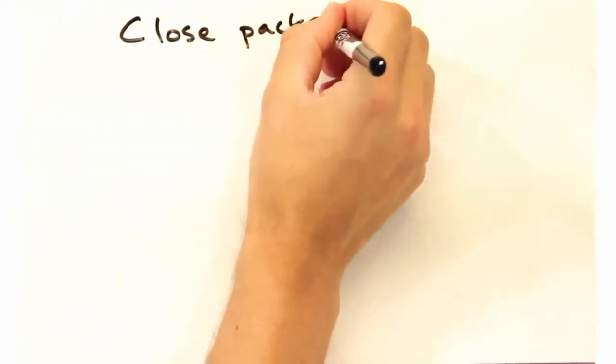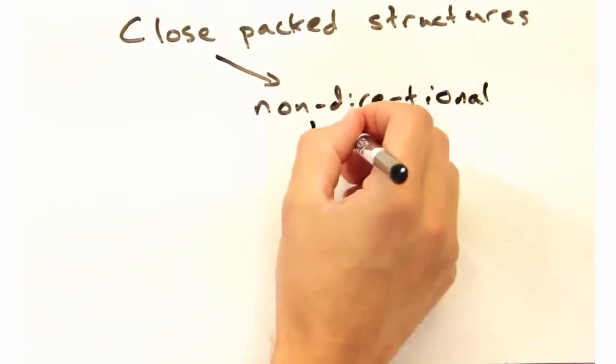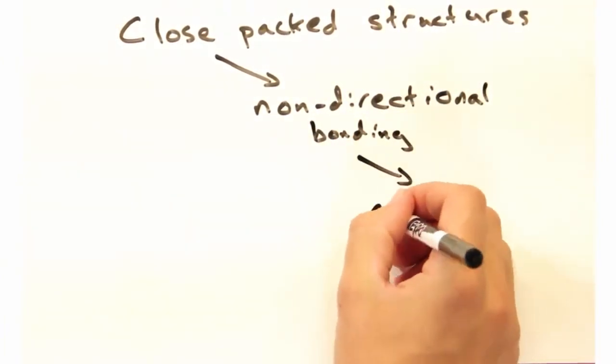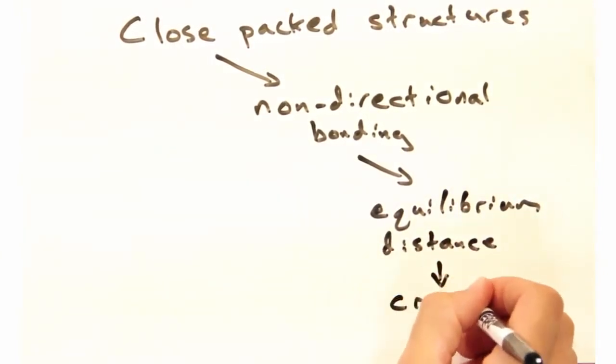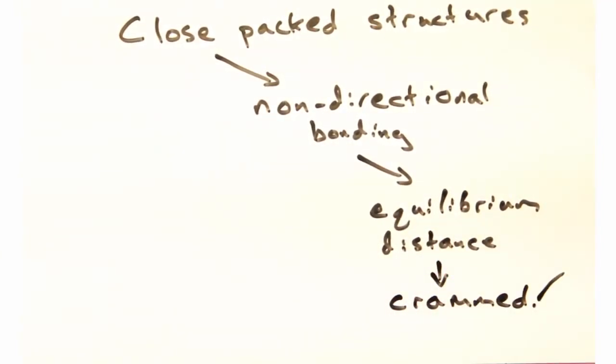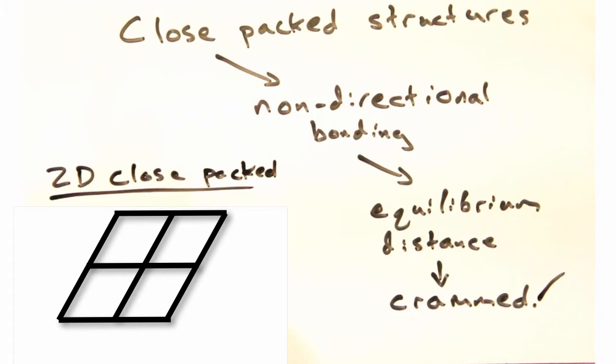Now the final structures we want to introduce are called the close-packed structures. In materials that show no preferred direction of bonding, Coulombic attraction and repulsion forces compress and expand the atoms. Eventually the nuclei settle into an equilibrium distance from one another. So we call it close-packed because literally the atoms try to cram themselves as tightly as they can to each other.